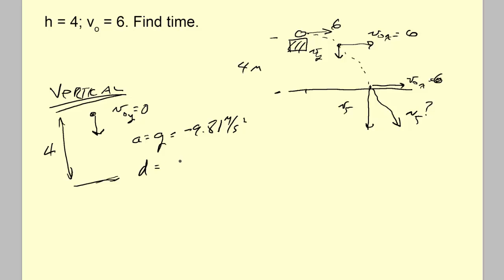Is the displacement 4 or -4? Because it's below — it's going down — it's -4. This is a situation where we could have used only positive values and gotten the same result, but we'll stick to the rigorous way.